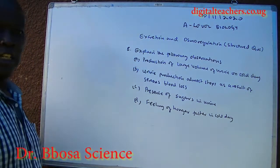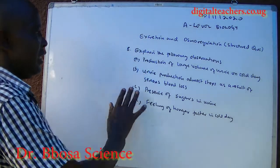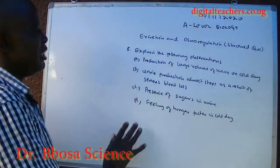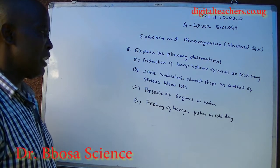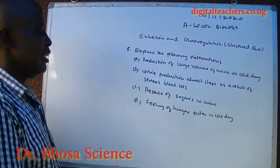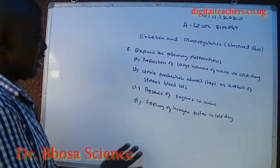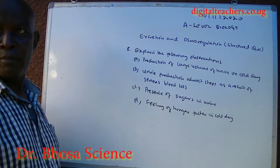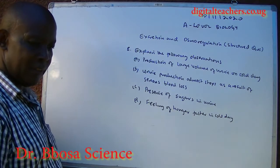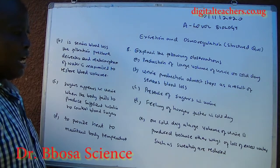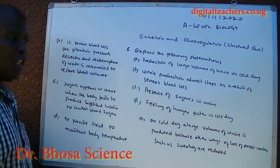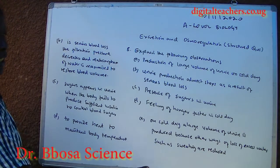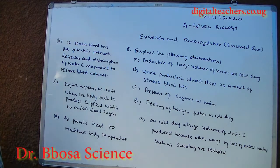Number eight: explain the following observations. A: production of a large volume of urine on a cold day. B: urine production almost stops as a result of serious blood loss. C: presence of sugar in the urine. D: feeling of hunger faster on a cold day. On a cold day, a large volume of urine is produced because other ways of losing excess water, such as sweating, are reduced.